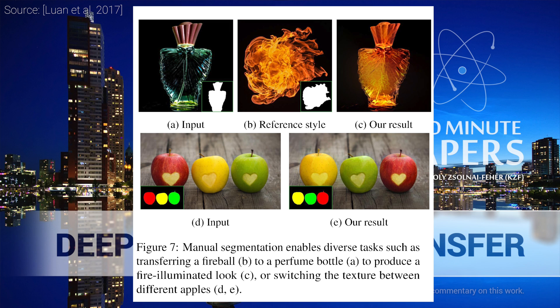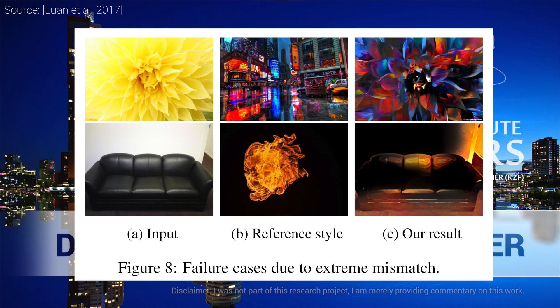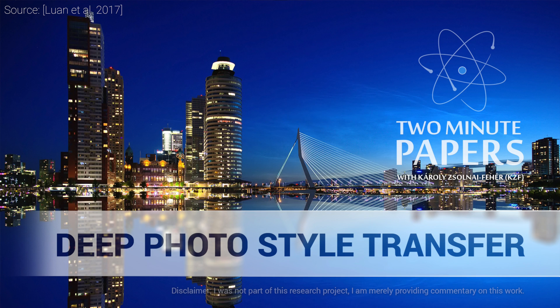But we've used one more new word here. What does this regularization term mean? This means that there are a ton of different possible solutions for transferring the colors, and we are trying to steer the optimizer towards solutions that adhere to some additional criterion — in our case, the affine transformations. In the mathematical description of this problem, these additional stipulations appear in the form of a regularization term.